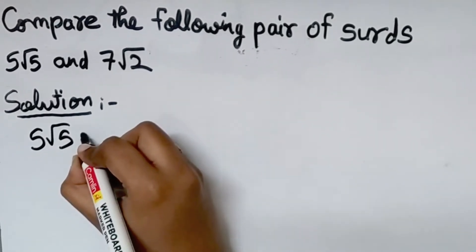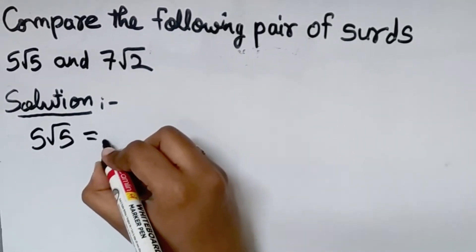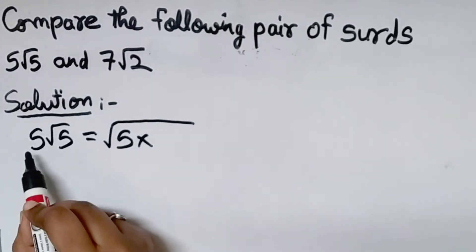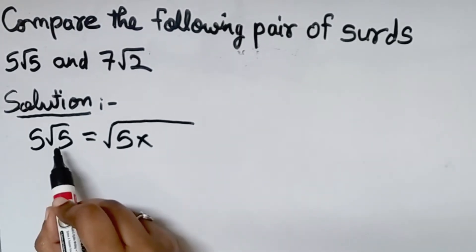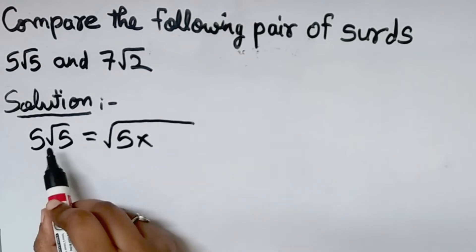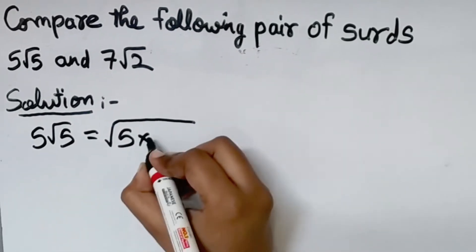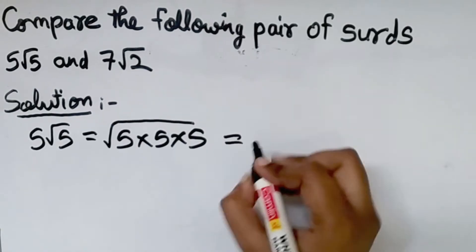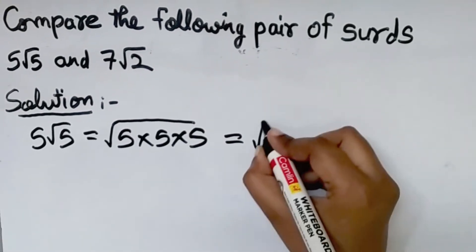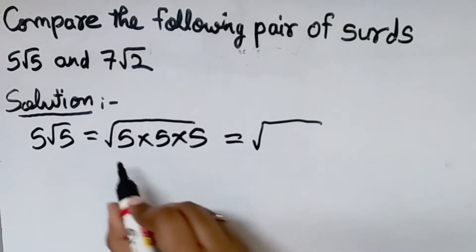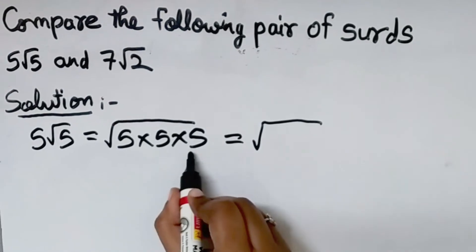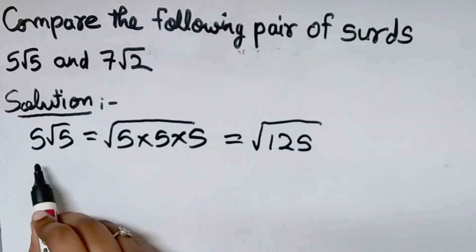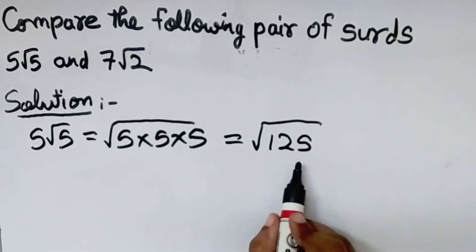To bring the 5 inside the square root sign, we have to multiply it two times: square root of 5 into 5 into 5, which gives square root of 25 into 5, which equals square root of 125. So 5 root 5 is equal to square root of 125.